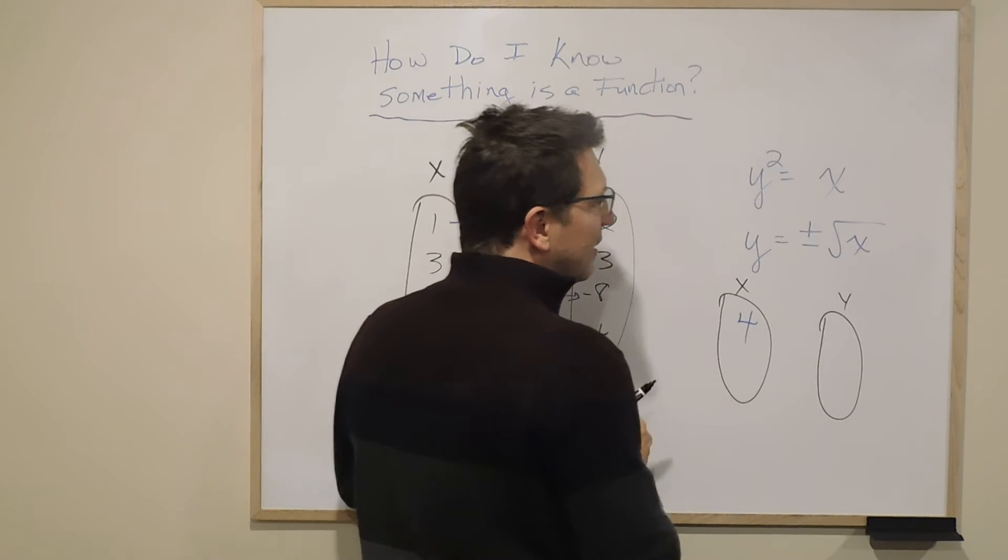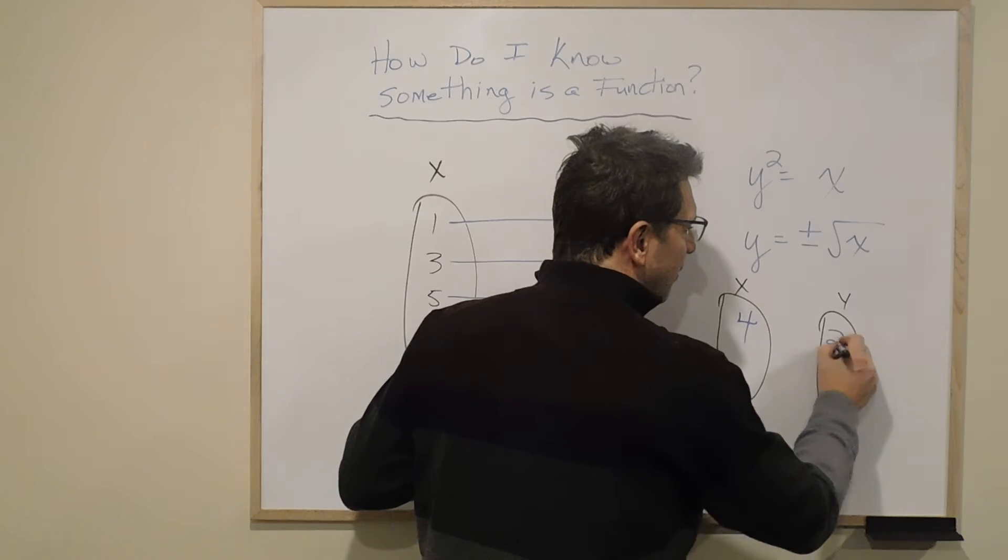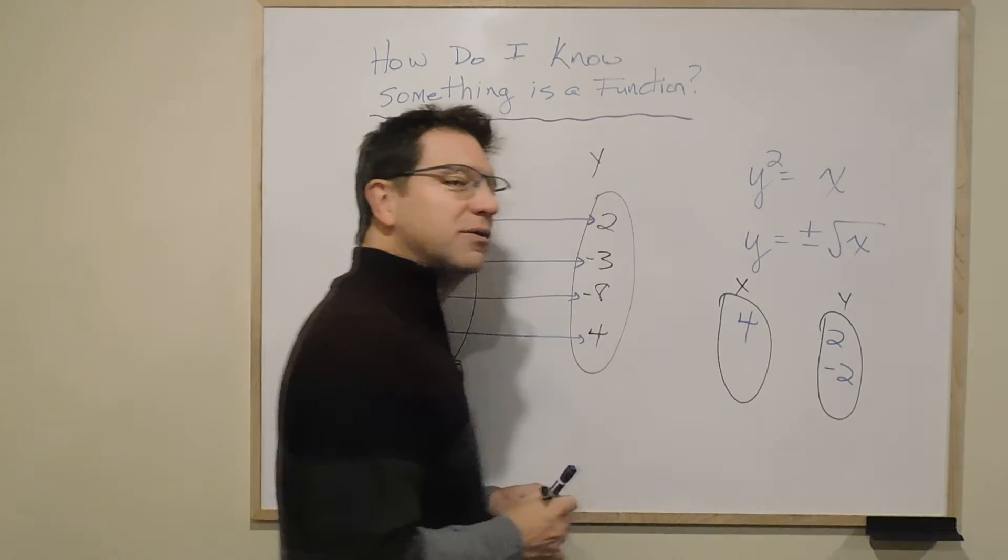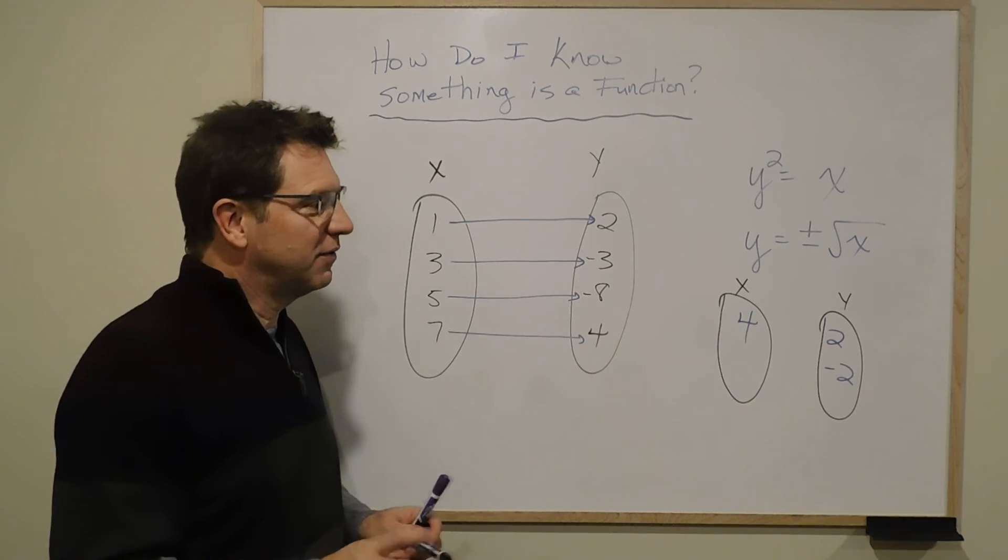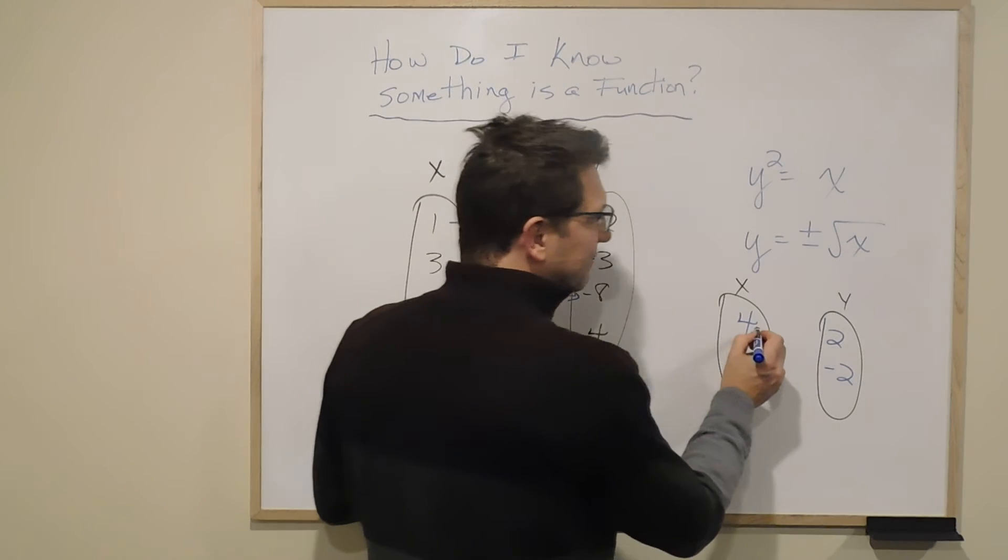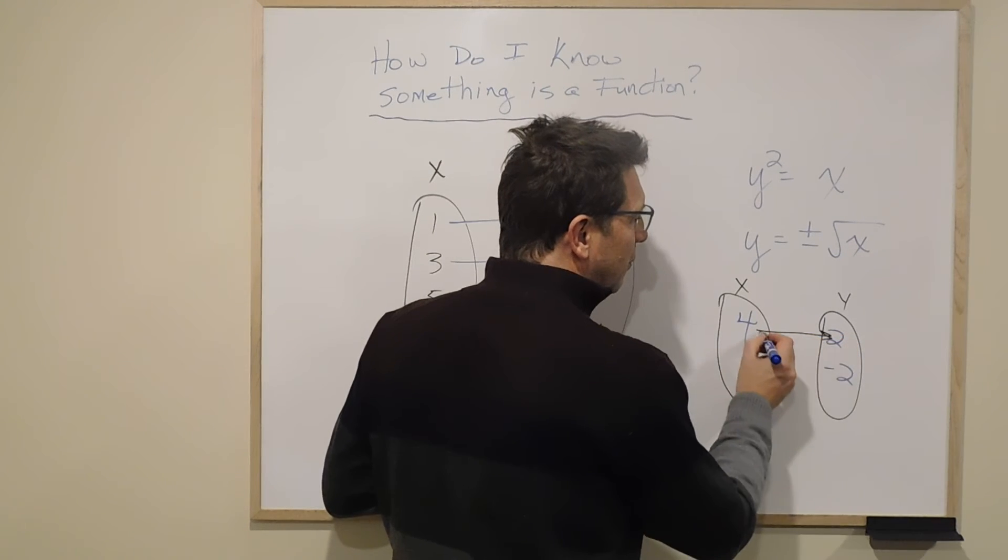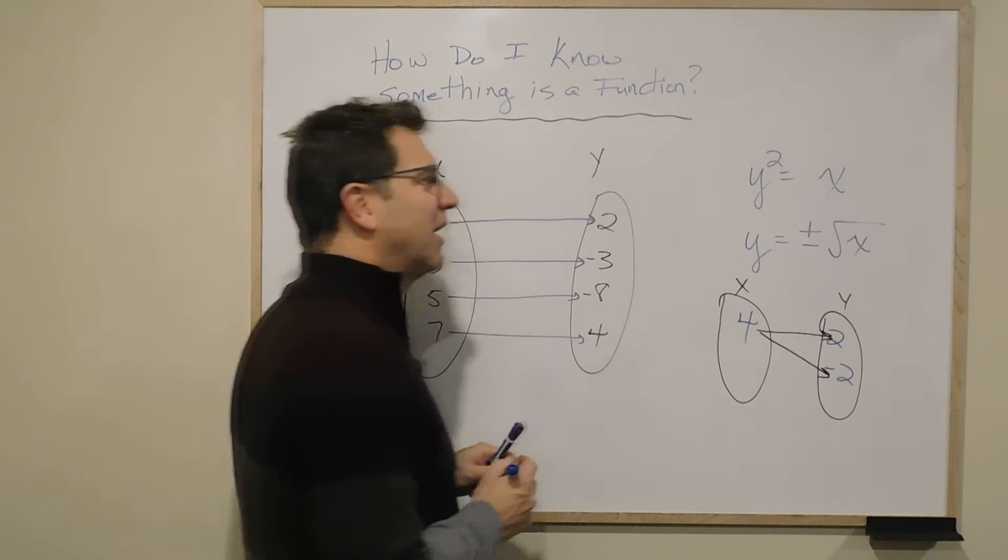Well, couldn't y be 2 or negative 2? 2 or negative 2, which means my x value could have two possible outcomes.